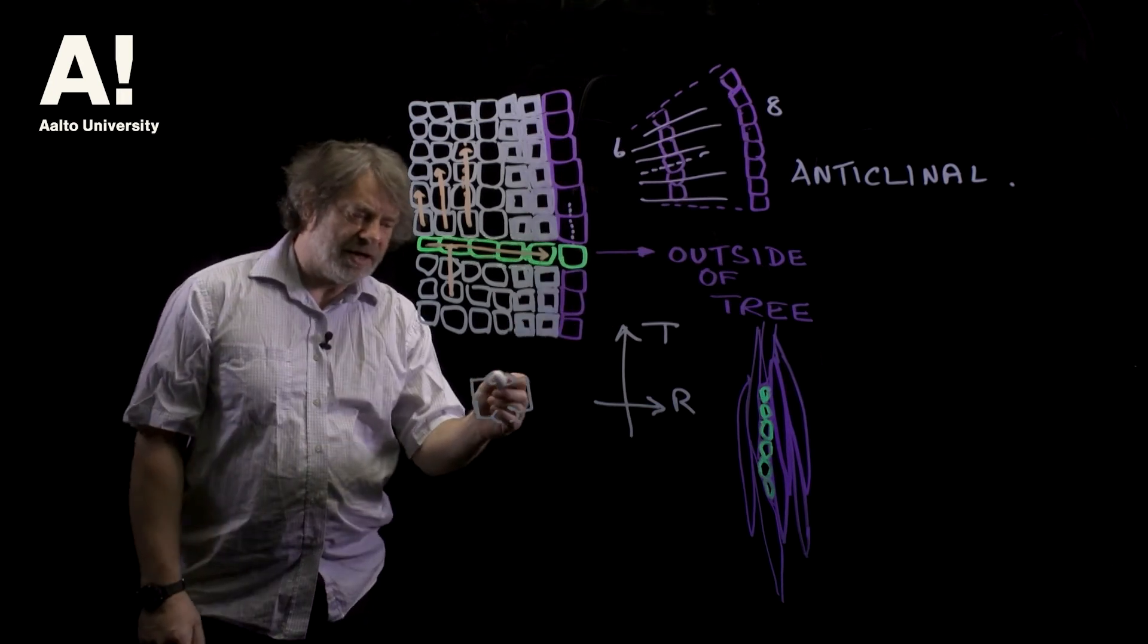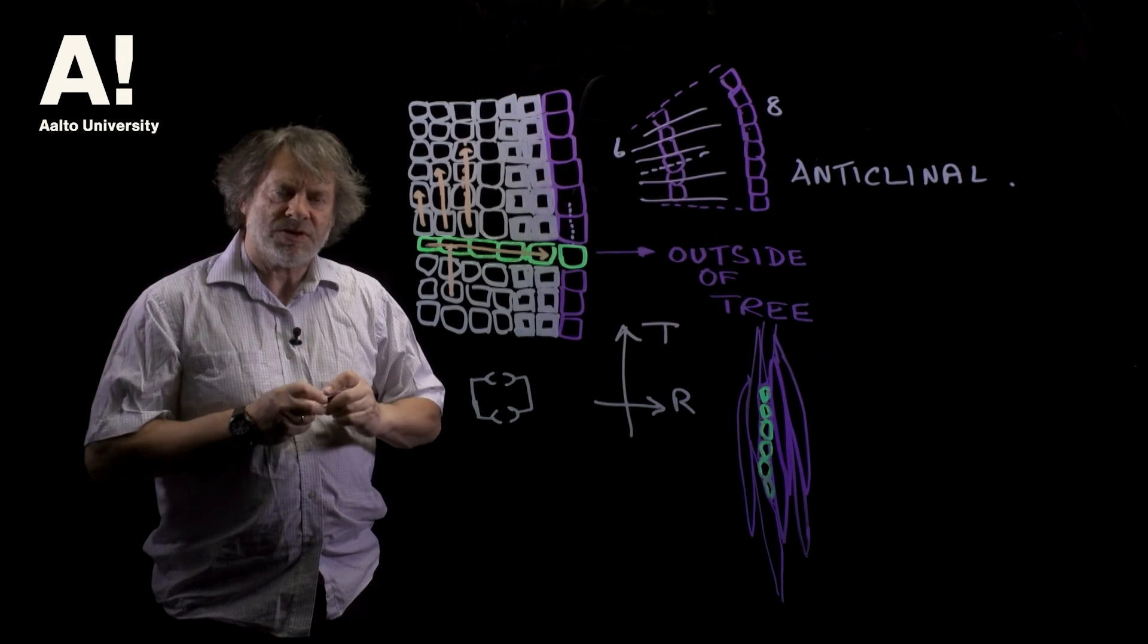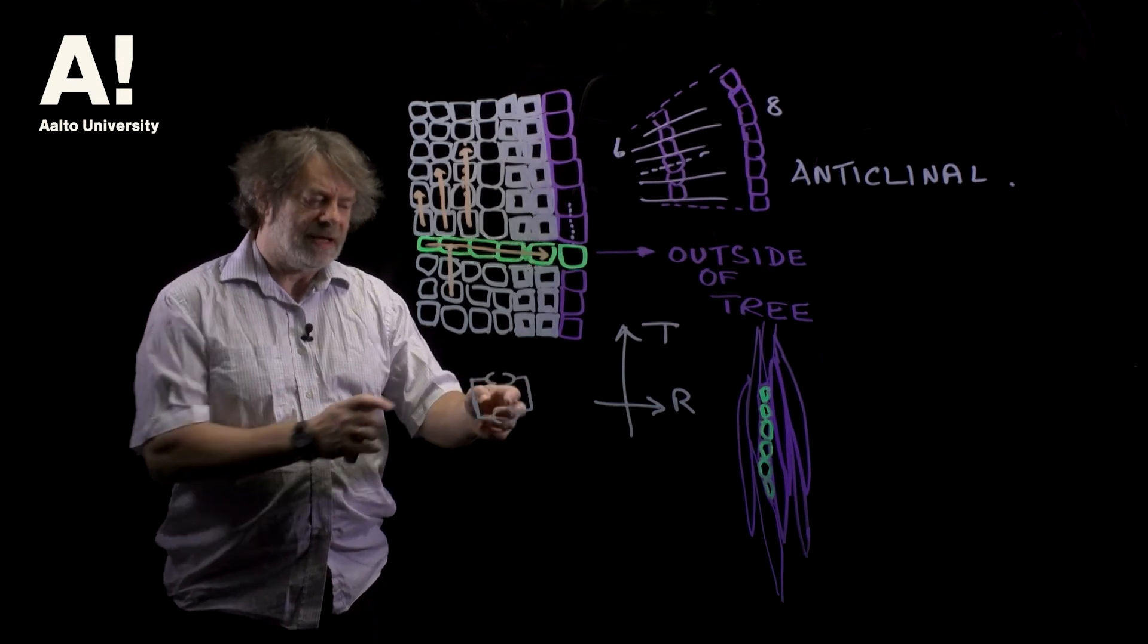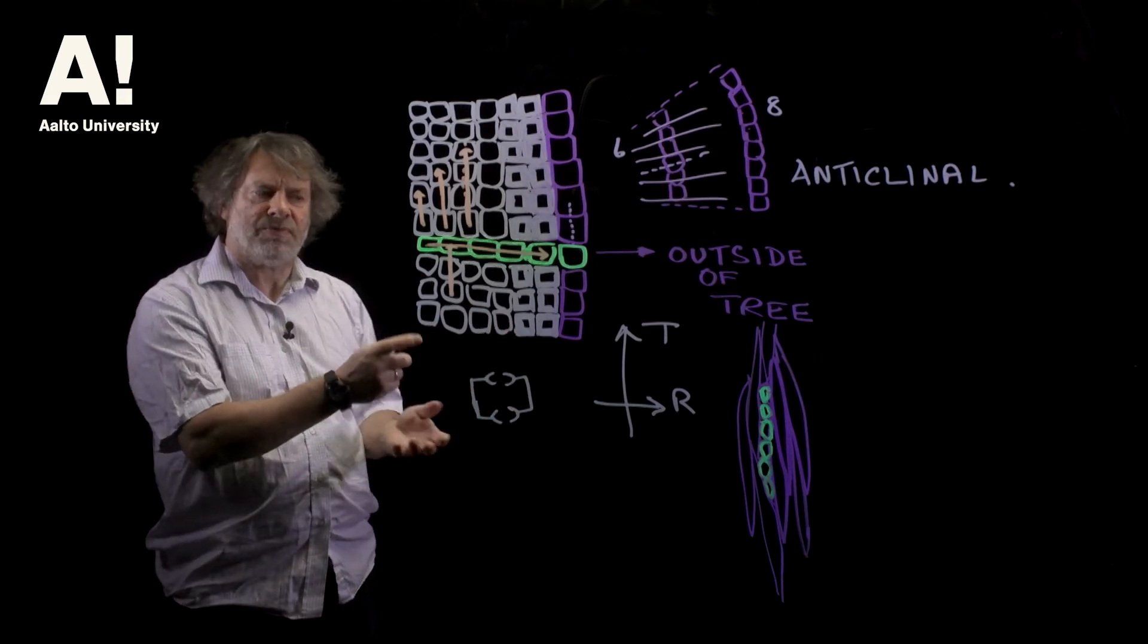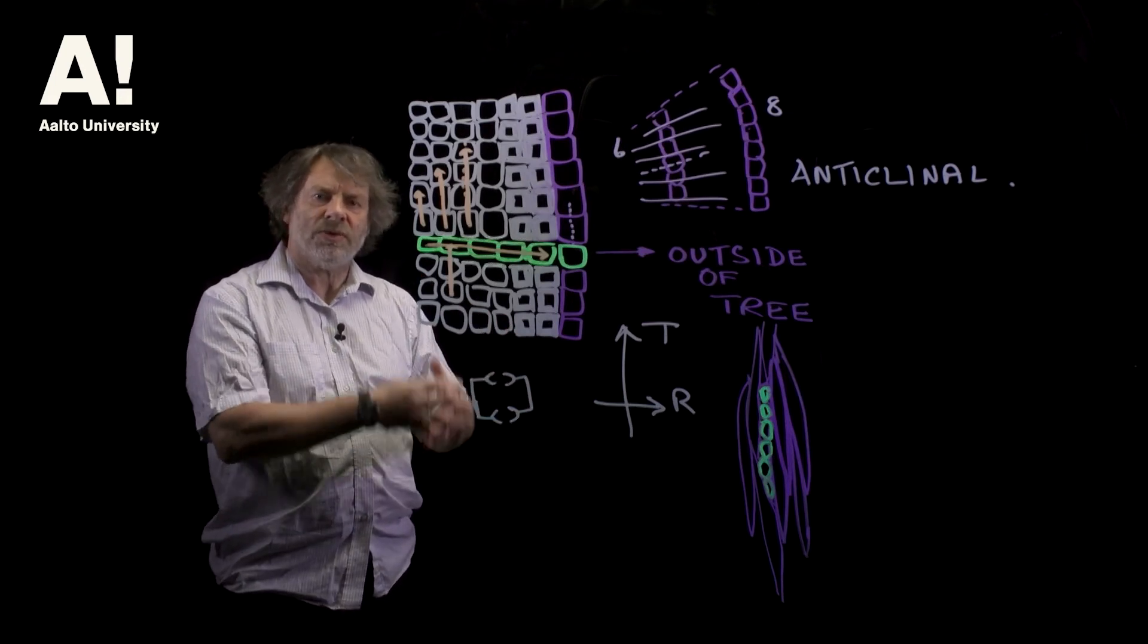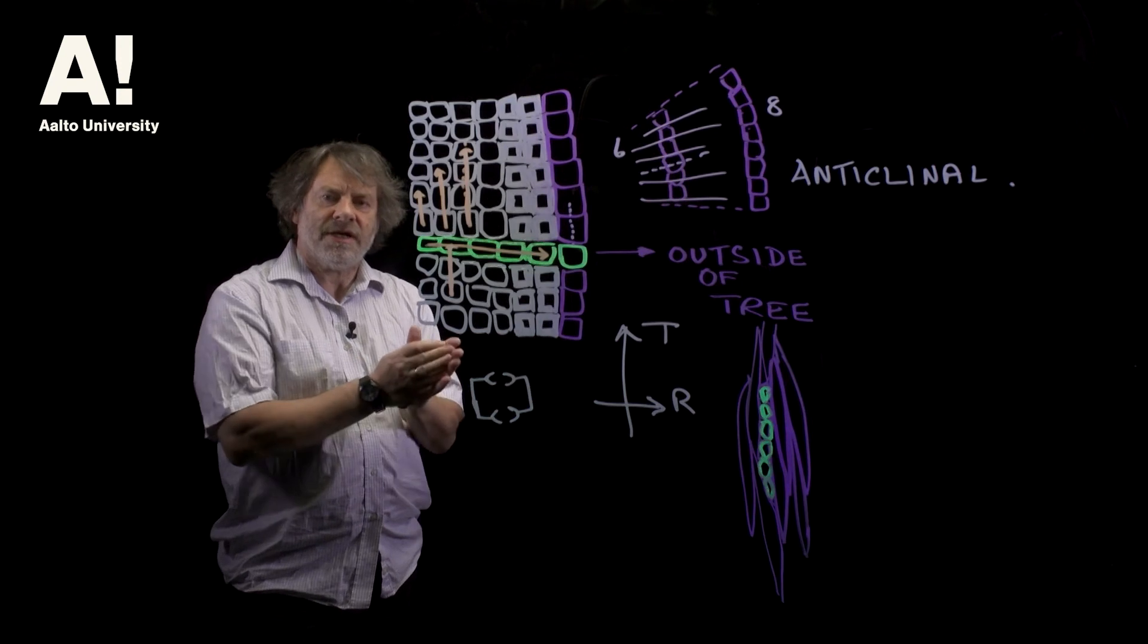So these bordered pits are on the tangential faces of the cell. They have little valves in them which I'll talk about in a minute and the reason they have the valves is that if there's any wounding in the tree or if there's any problem with the water column going up a tree and air gets in they can slam shut.